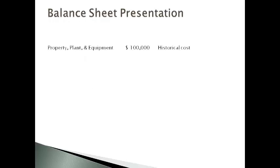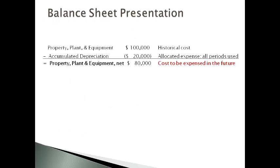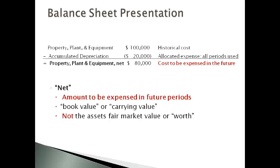Property, plant, and equipment is reported on the balance sheet net of the expense of using the asset so far to date. The asset is reported at historical cost, and accumulated depreciation is subtracted from the cost to get the book value — the net amount that will be expensed in future periods. This is not equal to fair market value or net worth.